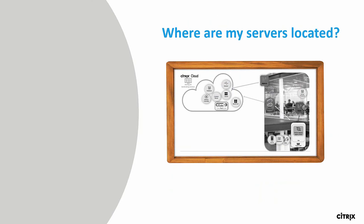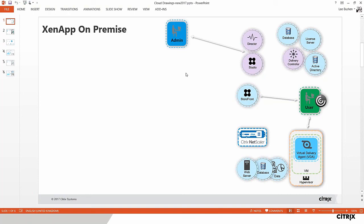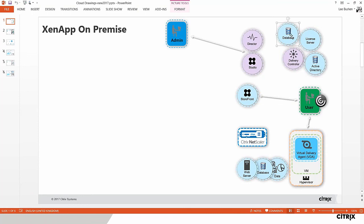Let me do a whiteboard exercise on the ZenApp and ZenDesktop architecture. In the FlexCast Management Architecture, the heart of the system is the delivery controller, which sits on your premises and brokers all user connections to virtual desktops and apps. It comes with a license server, Active Directory for authentication and authorization, and a back-end database holding all configuration information.